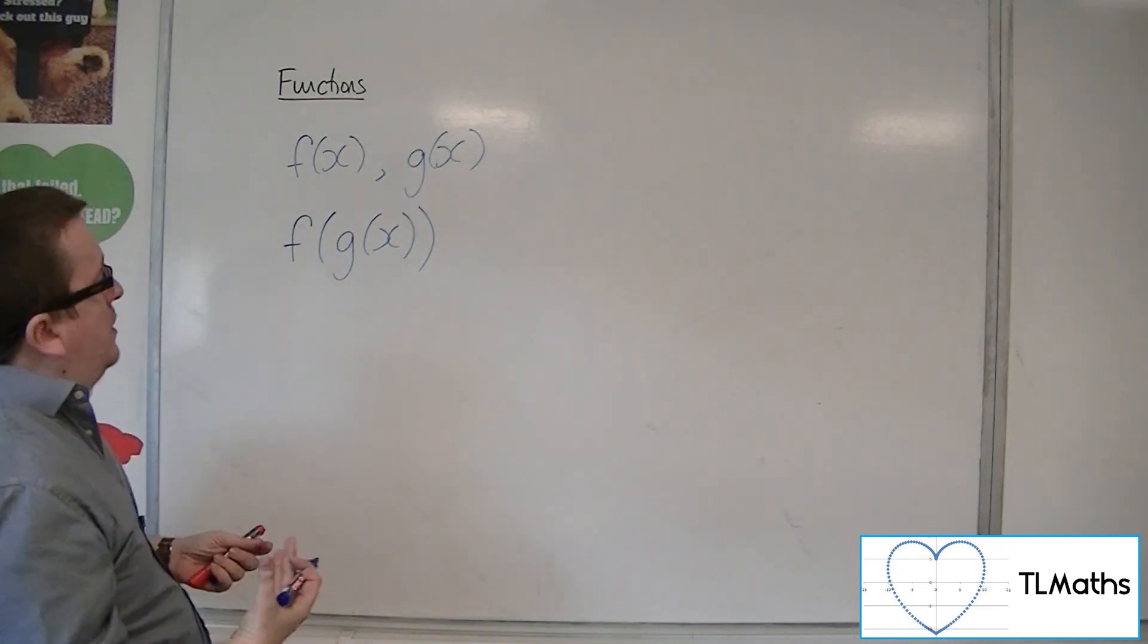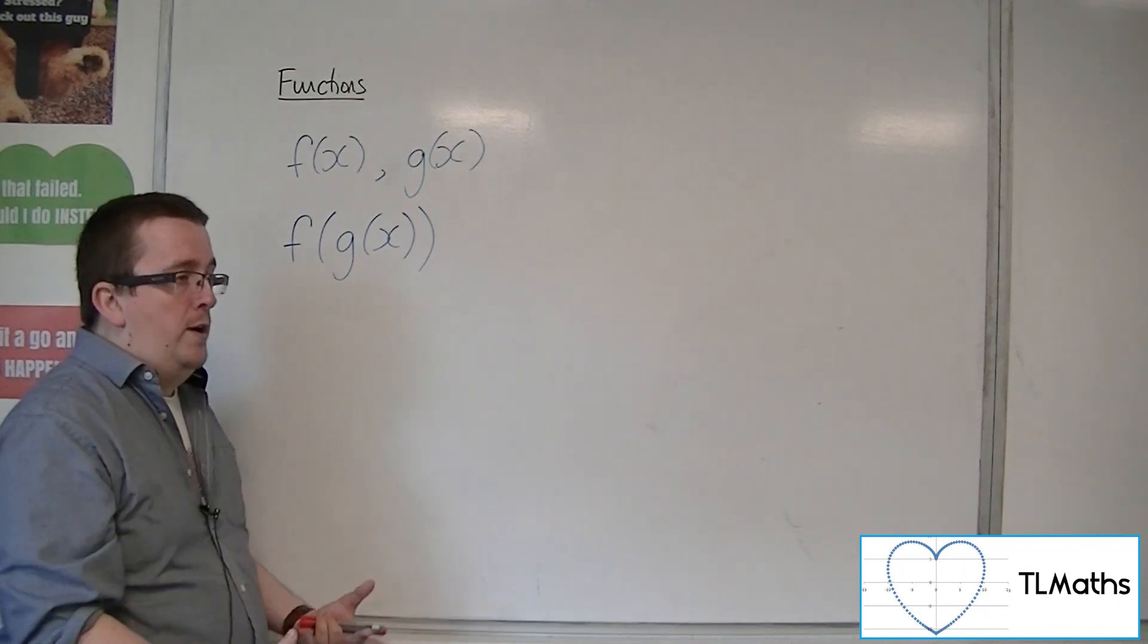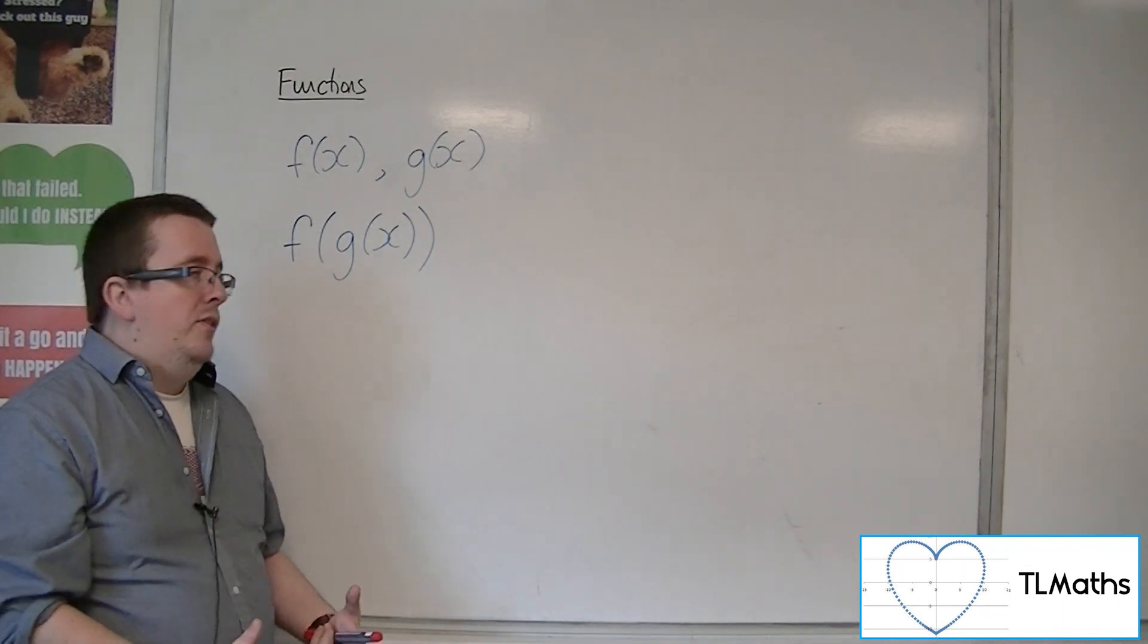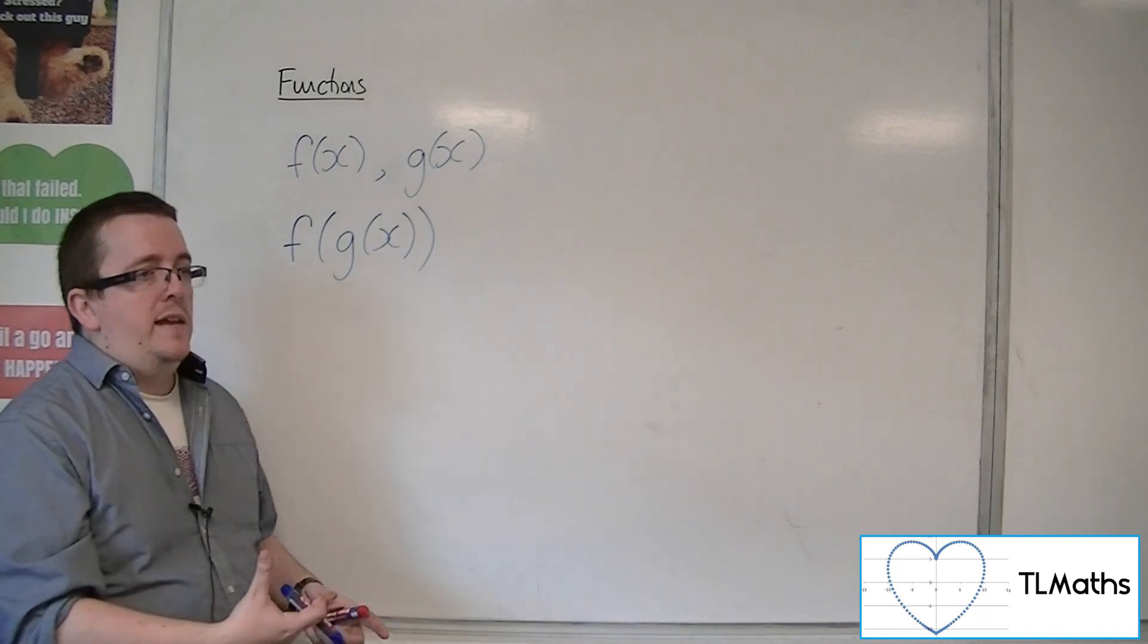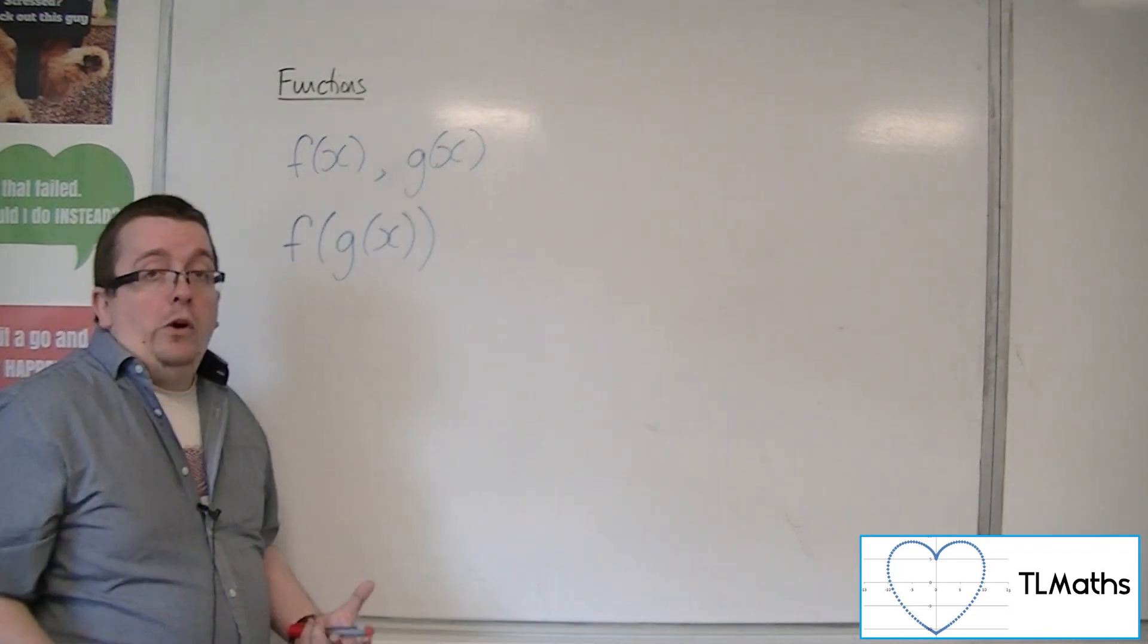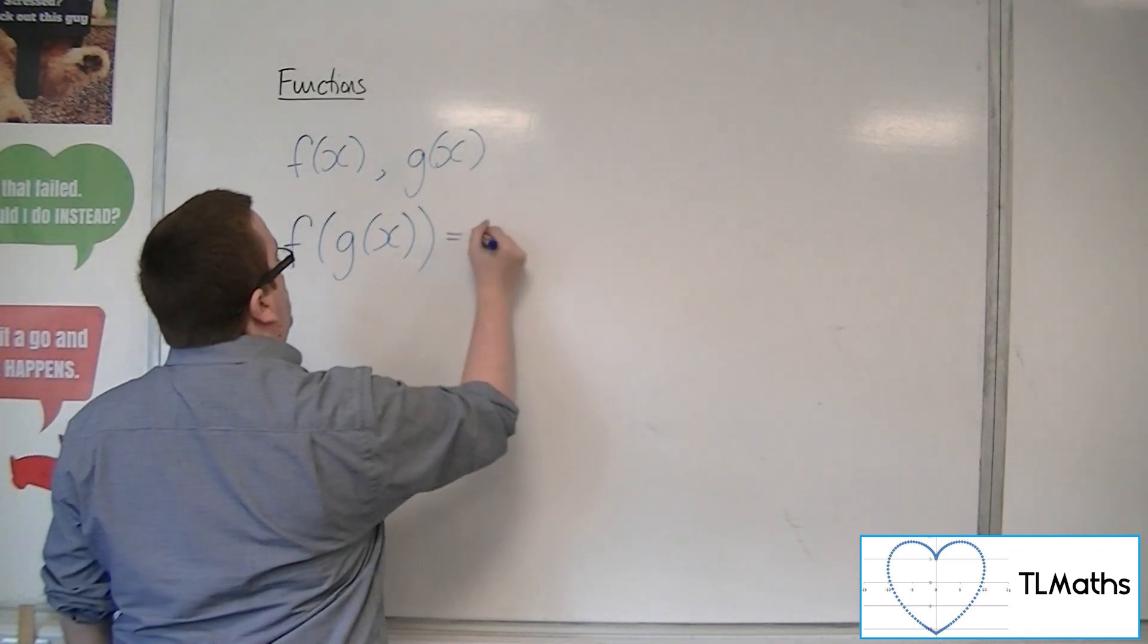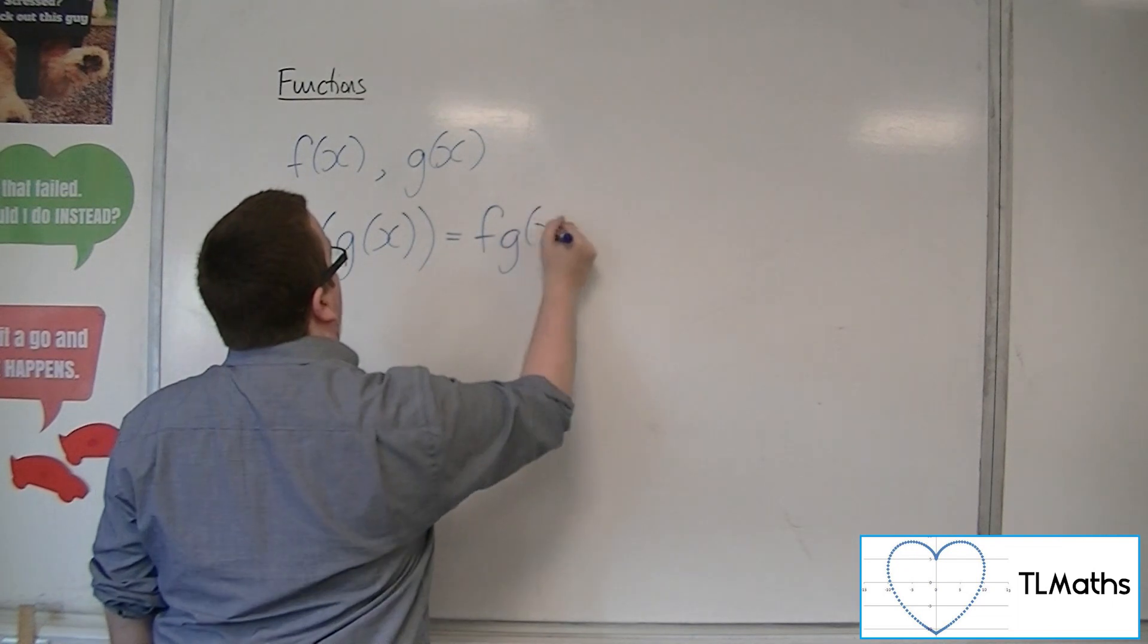Now, as you might imagine, as I start substituting in more and more functions into one another, I get more and more brackets and it gets much more difficult to really figure out what's going on. So to shorthand this notation, we write this as fg of x.